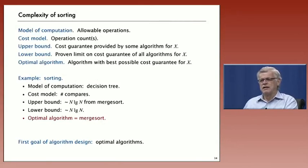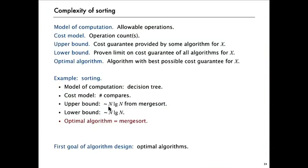That's a lower bound on the complexity of sorting. So we knew that the upper bound was proportional to N log N. And we just proved that the lower bound is proportional to N log N. And that means that merge sort is an optimal algorithm. That's the first goal of algorithm design, is to try and find optimal algorithms for the problems that we need to solve.